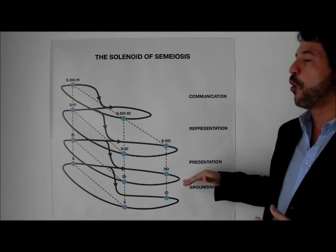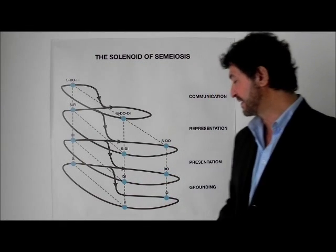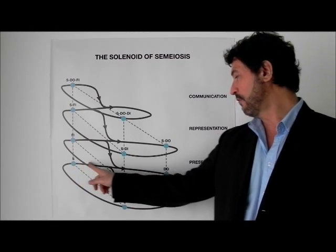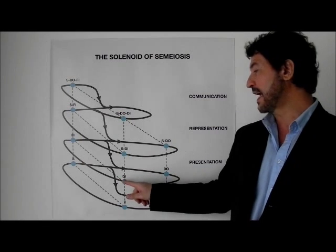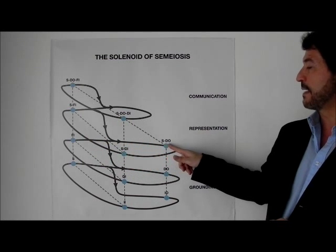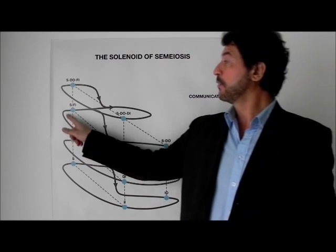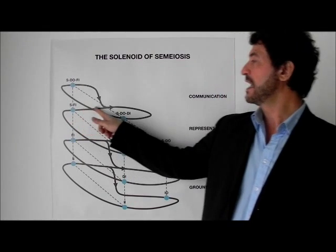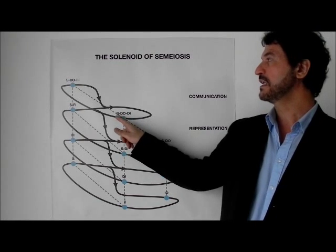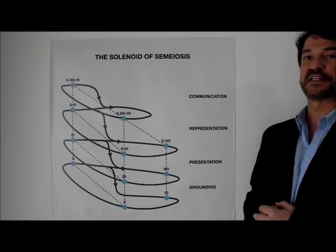The solenoid gives us an order of determination among the 11 aspects of the sign, starting with the immediate object, going to the immediate interpretant, then the sign itself, then dynamic object, then dynamic interpretant, then final interpretant, then relation sign to dynamic object, then relation sign to dynamic interpretant, and finally relation sign to dynamic object and final interpretant.